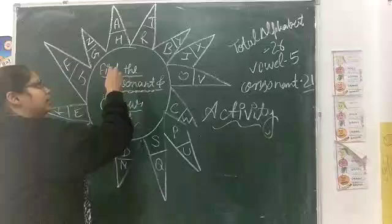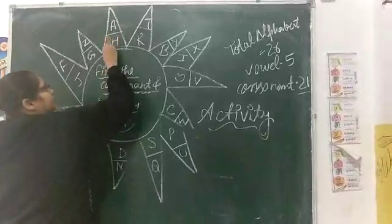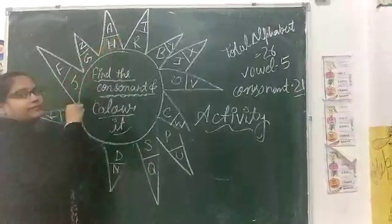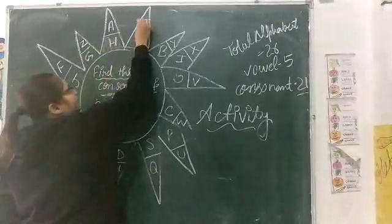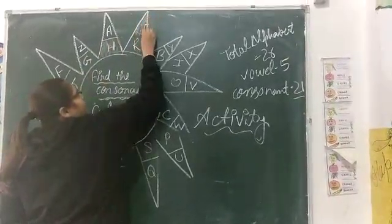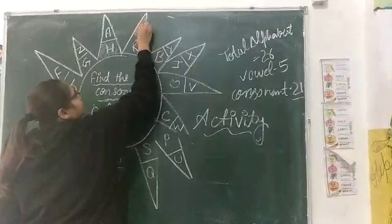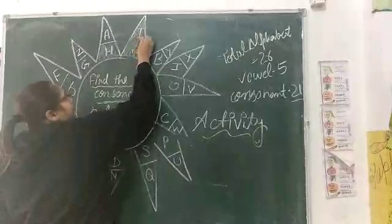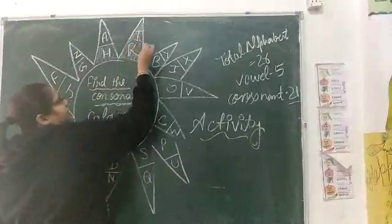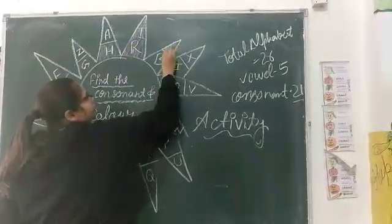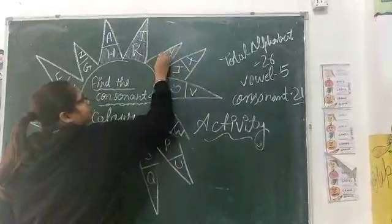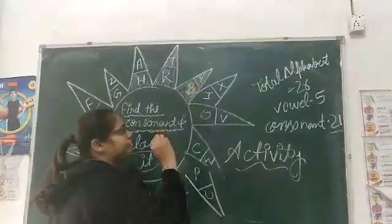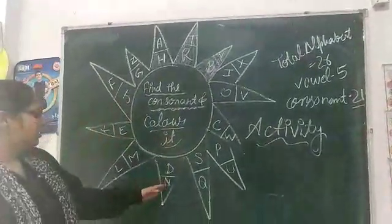So, X is our consonant. So, we have yes, it is our consonant like this. R is also our consonant. So, we will color it. Okay? Then Y is also our consonant. B is also our consonant. Okay? Look here.